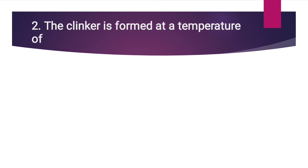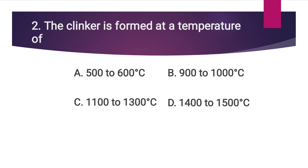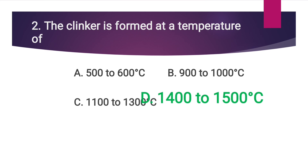Question: The clinker is formed at a temperature of — Option A: 500 to 600°C, Option B: 900 to 1000°C, Option C: 1100 to 1300°C, Option D: 1400 to 1500°C. Answer: Option D — 1400 to 1500 degree Celsius.